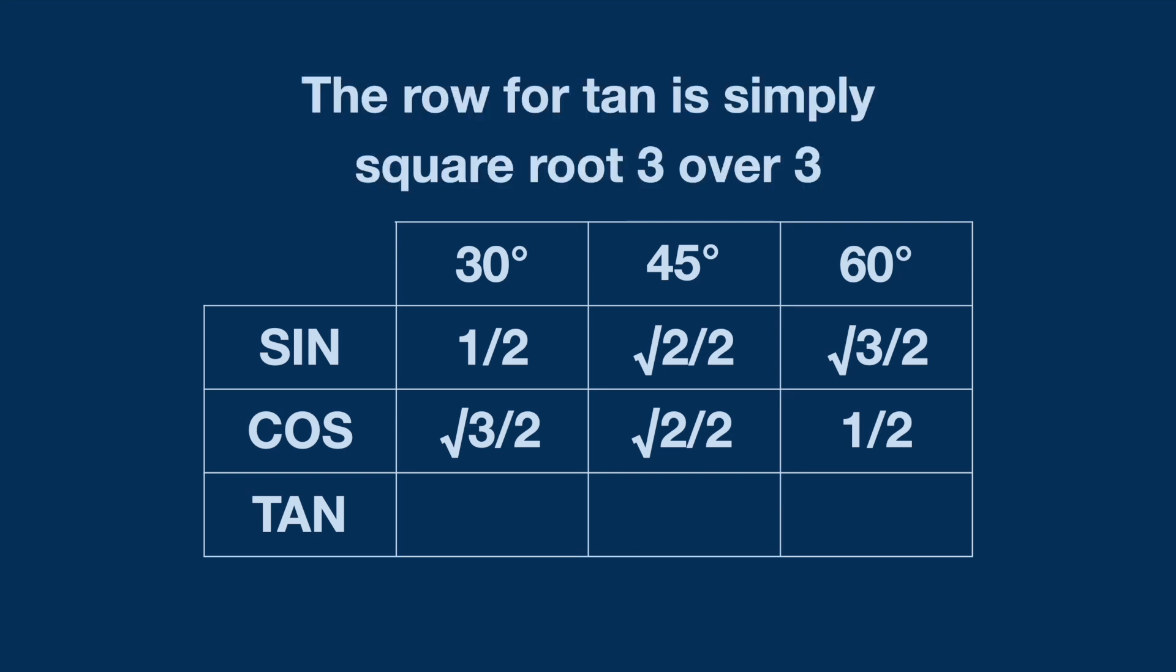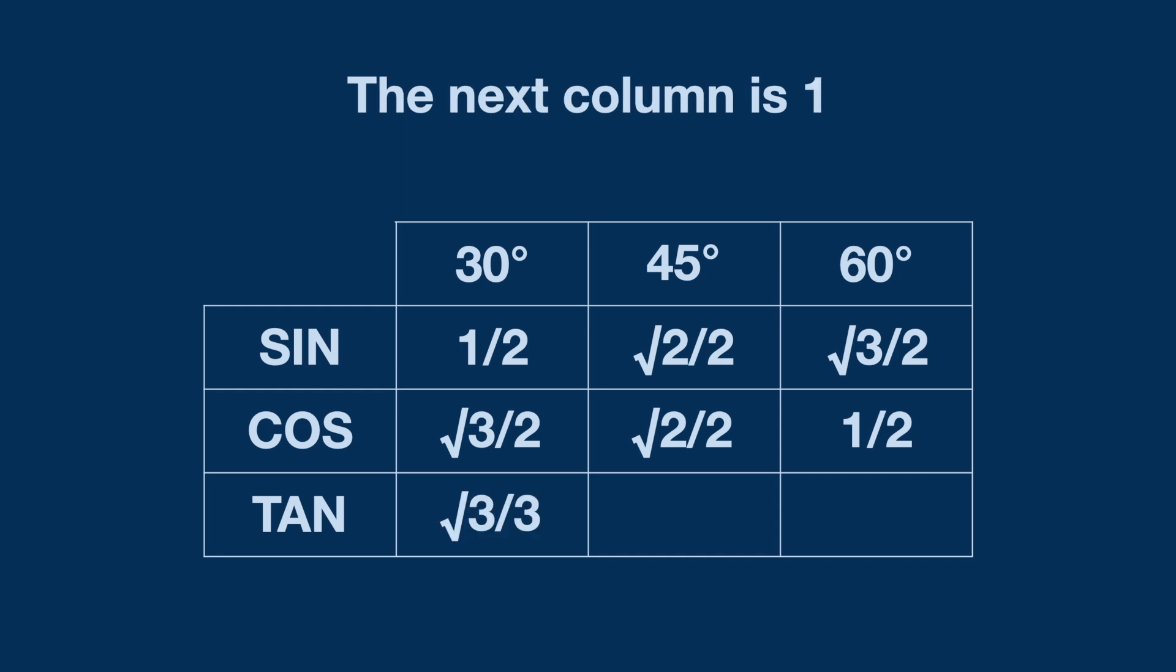The row for tan is simply square root three over three. The next column is one and then again square root of three.